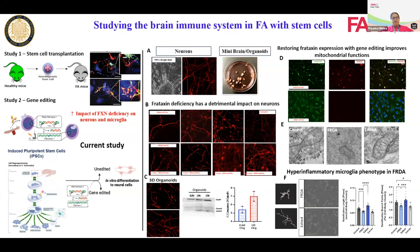We are differentiating these iPSCs into neurons and microglia cells. We are also making an organoid called a mini brain, because in the brain many different cell types are present beyond just neurons and microglia, and we want to understand the impact of other cell types on neurons and microglia. We successfully generated neurons in the plate - this is a representative image of how they look. When we started differentiating these neurons, we noticed some very striking phenotypes in the patient cell line, with many dots indicating cell death.